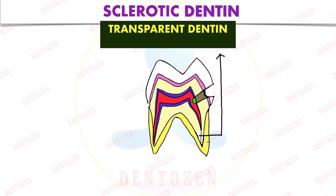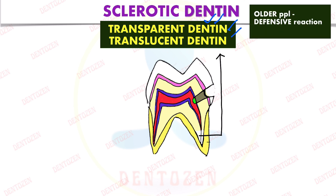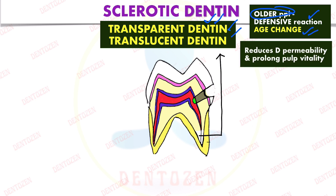Next is sclerotic dentine, which is also called transparent dentine or translucent dentine because it appears transparent in ground sections. It is seen as a defensive reaction in older people, so it is also an age change. The protection of the pulp happens because dentine permeability is reduced — the dentinal tubules get filled with mineral, reducing permeability and prolonging pulp vitality, preventing anything from entering the pulp.